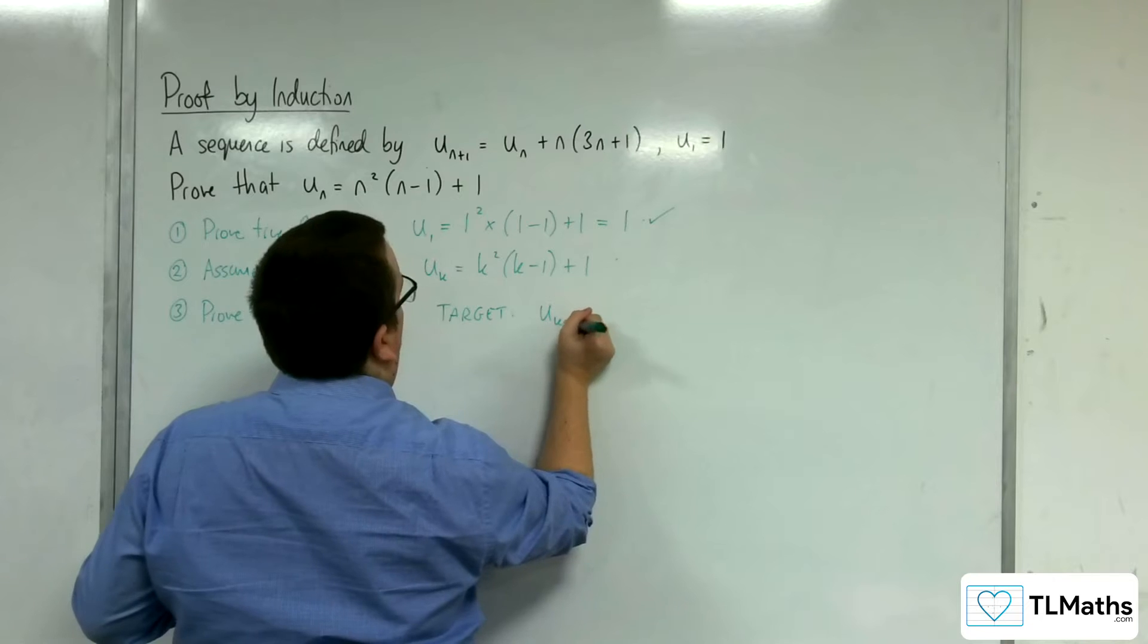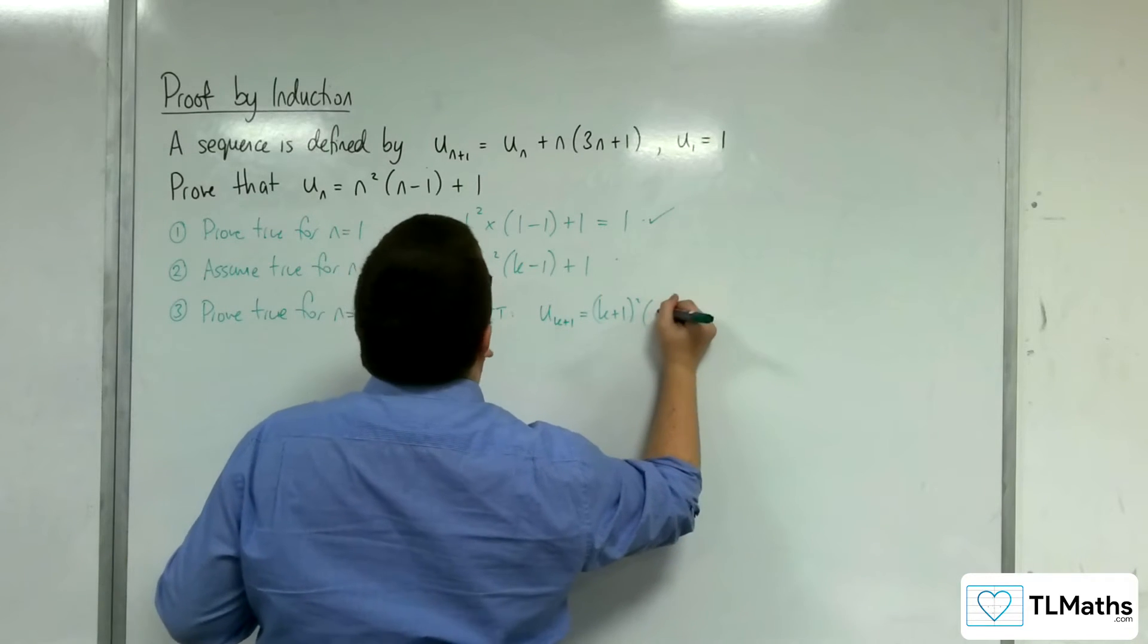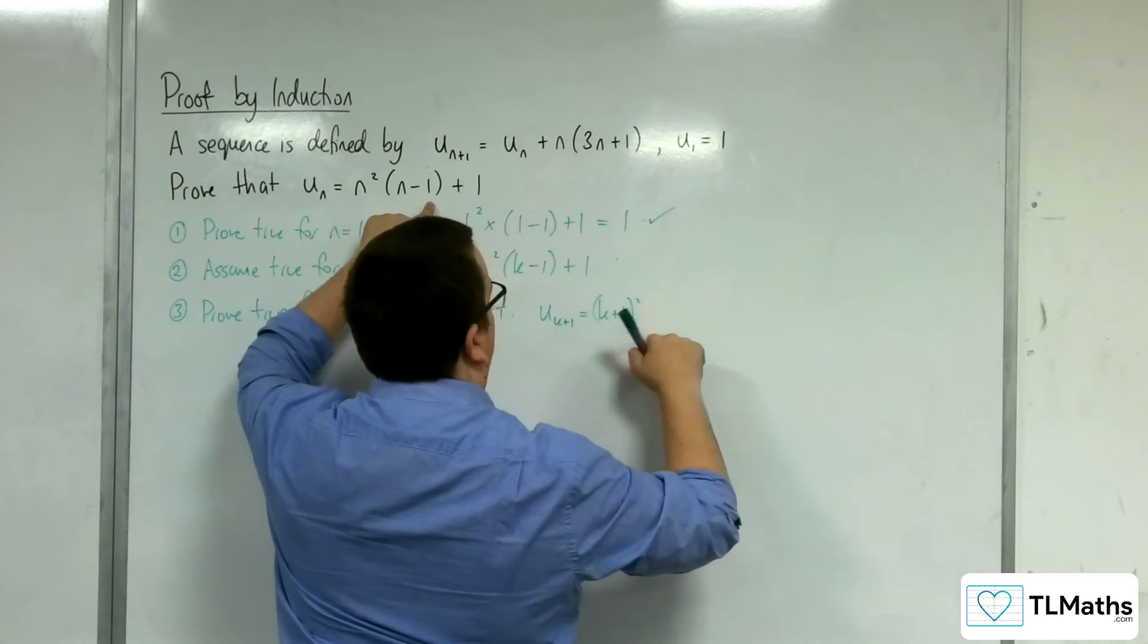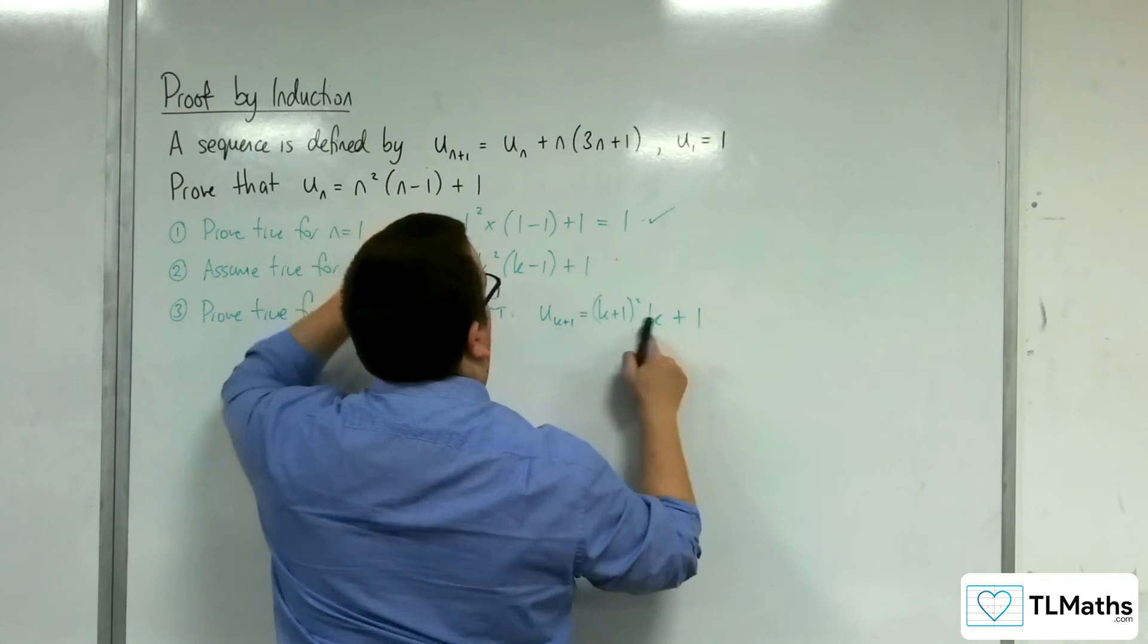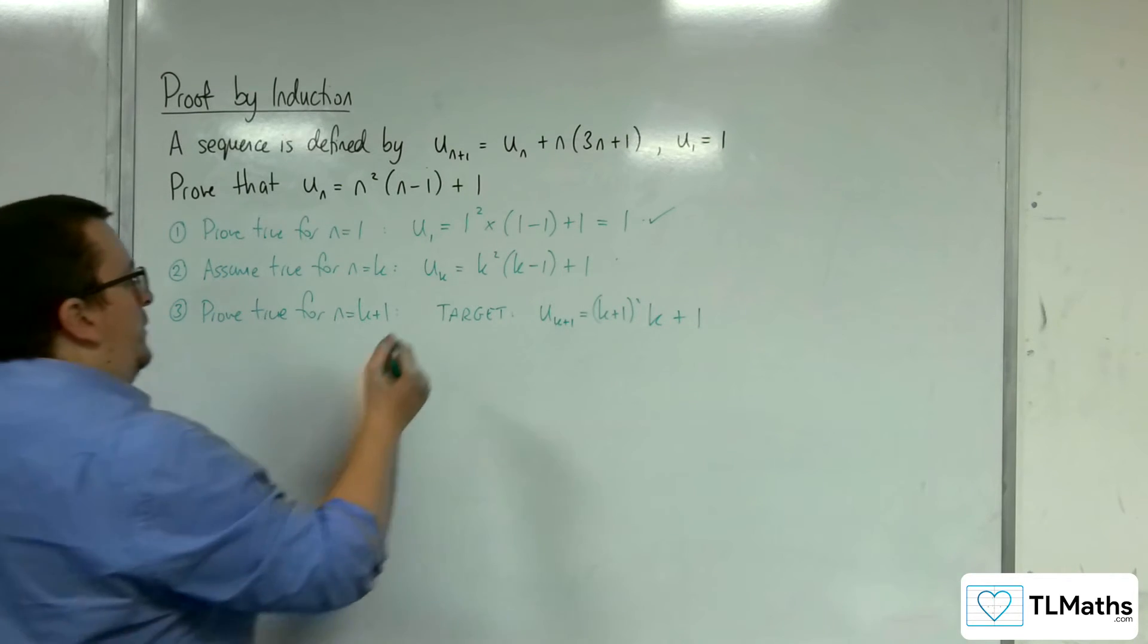If I substitute k plus 1 into this, I would get u_{k+1} equals (k+1)² times (k+1-1), so k. And we've got that plus 1 on the end. So that's my target.